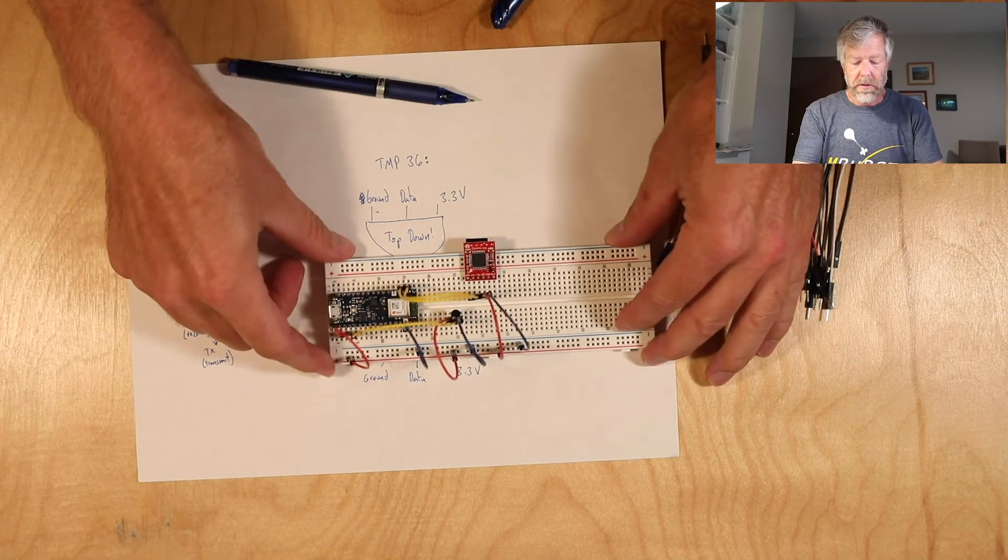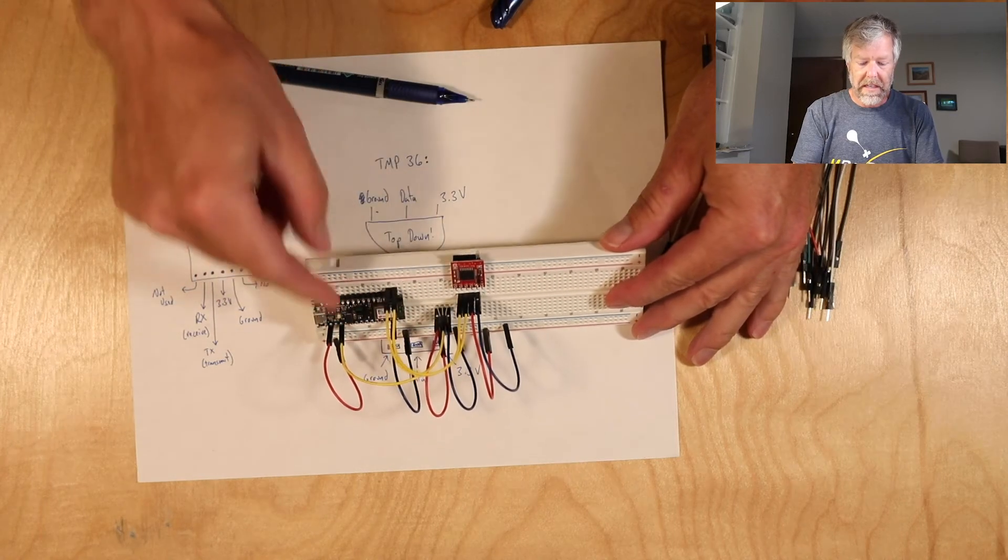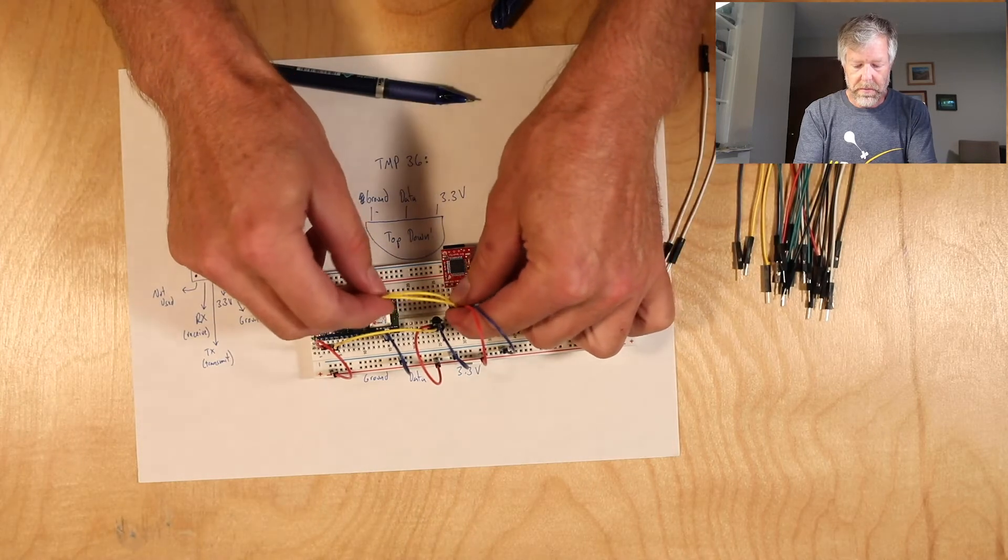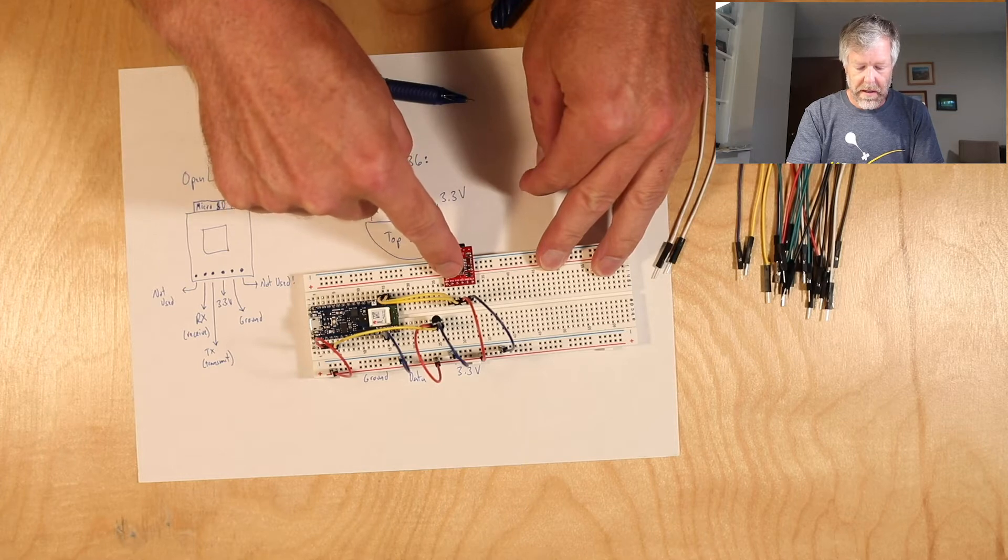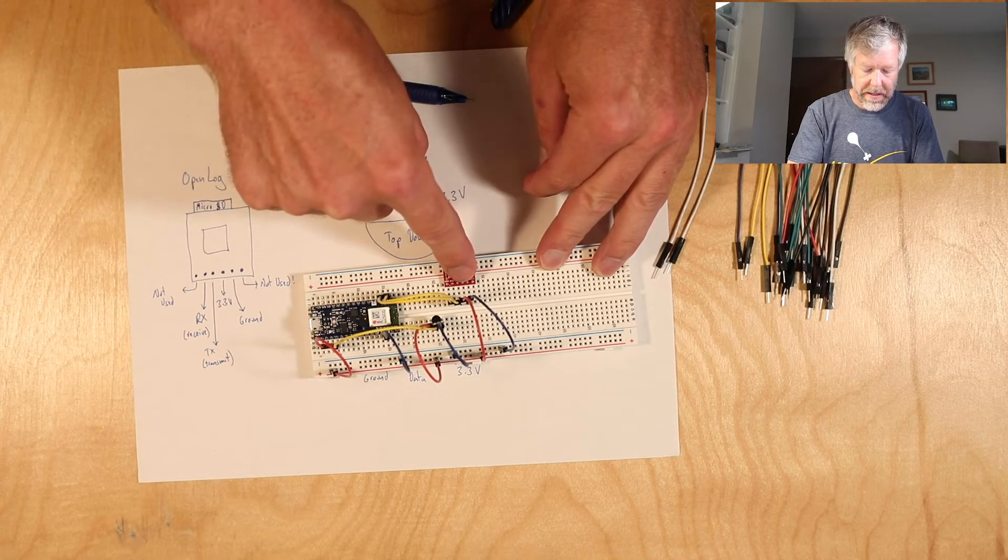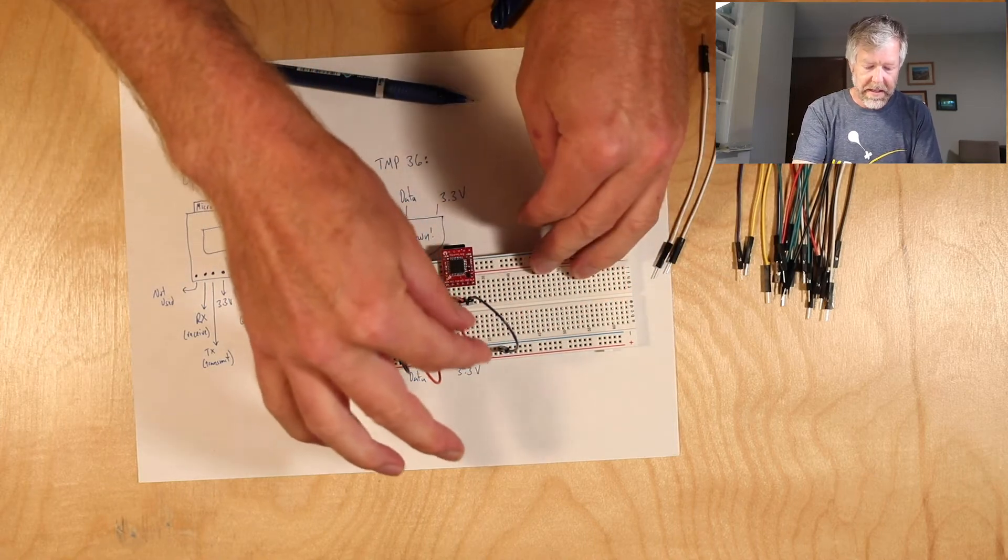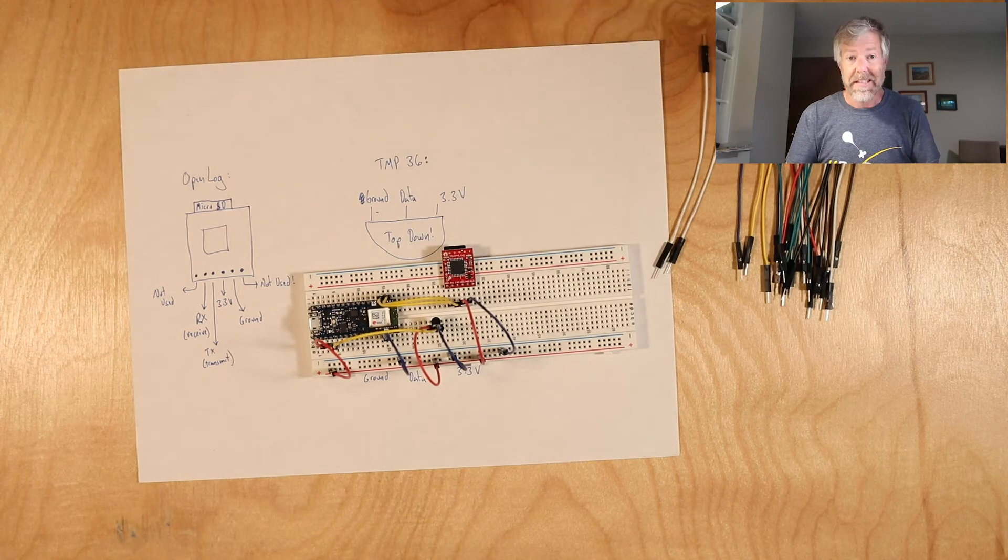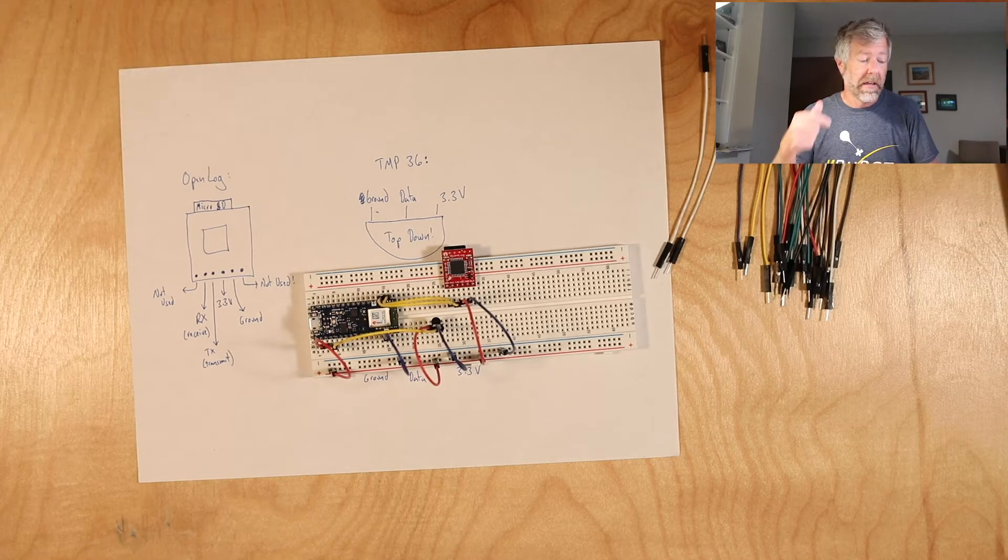And then this one, the second pin, is the receive on the Arduino. Receive on the Arduino goes into the transmit on the OpenLog. Now we have the OpenLog all wired up. That's it. So these two jumpers come over, and you can see that they're actually sort of reversed here. Make sure that you trace them right. Transmit here, receive there. Receive there, transmit here. Power is this line, the red line, and ground is the blue line. That is all that we need to do for the wiring, and we're done on the wiring.